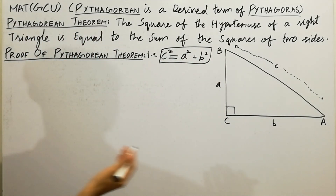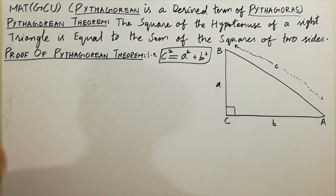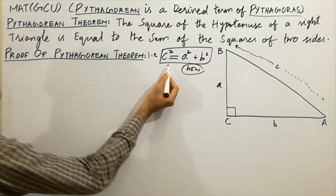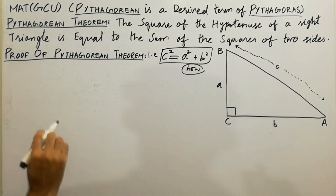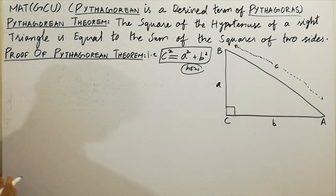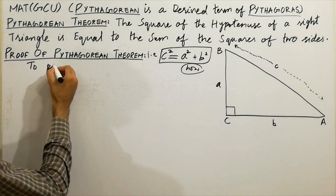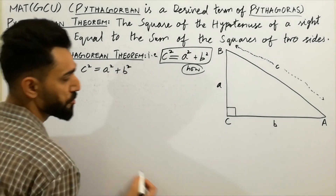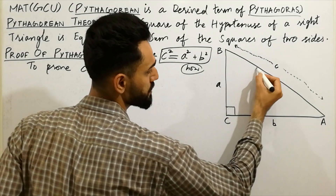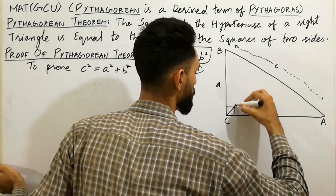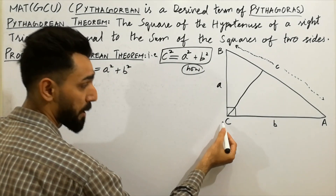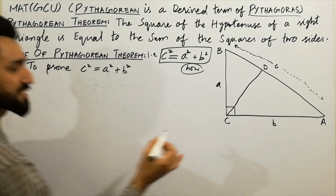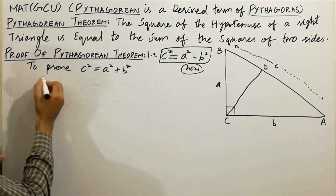So we write: c² = a² + b². This is the Pythagorean theorem. Now, the third step is very important, in which I will prove how c² is equal to a² + b². Please don't skip any step. To prove c² = a² + b², in this figure you have to draw a perpendicular line from point C to line AB.